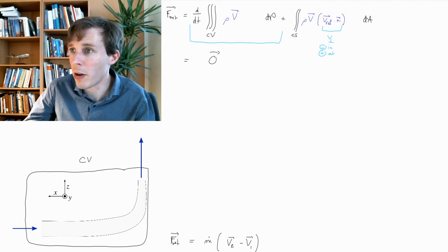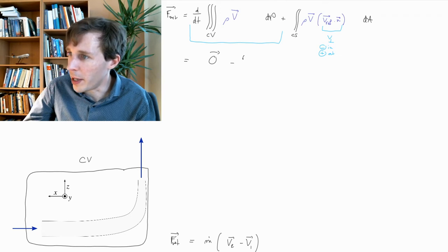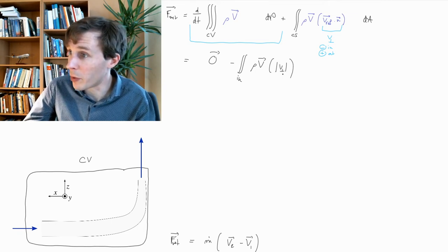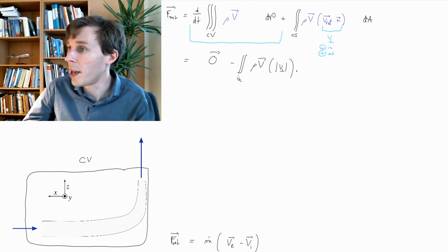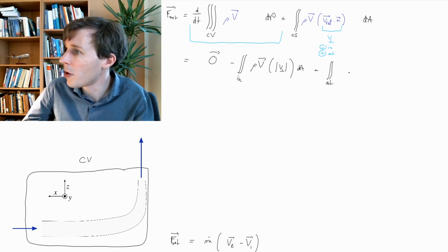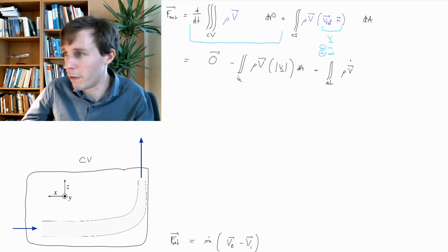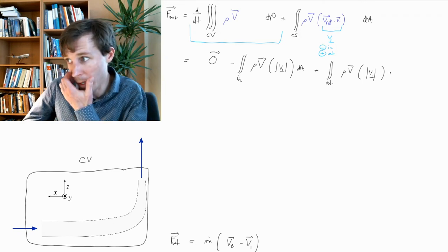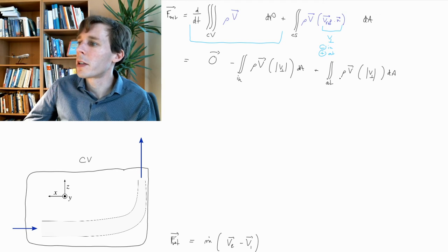Let's now write the rest of this equation. We have minus the integral over the incoming surface of rho times the velocity vector times the absolute value of v_orthogonal dA — because v_orthogonal is negative at the inlet, putting an absolute value there gives us a minus sign. And for the outlet, we have exactly the same thing except it's a plus: integral over the outlet of rho times vector v times v_orthogonal dA.